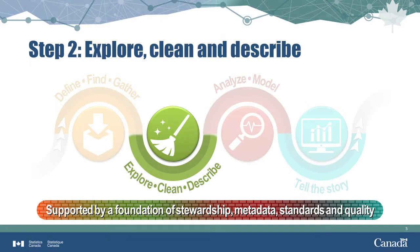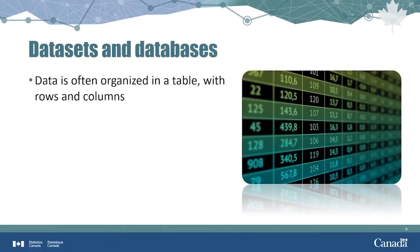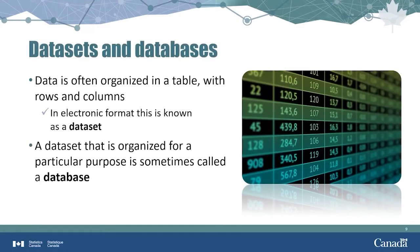Now let's consider what is data at the next step in the data journey. Once we have data, we're curious to explore it. If we find errors in the data, we try to correct them. Data is often organized in a table with rows and columns. In electronic format, this is known as a dataset. A dataset that is organized for a particular purpose — for example, hospital registrations — is called a database.